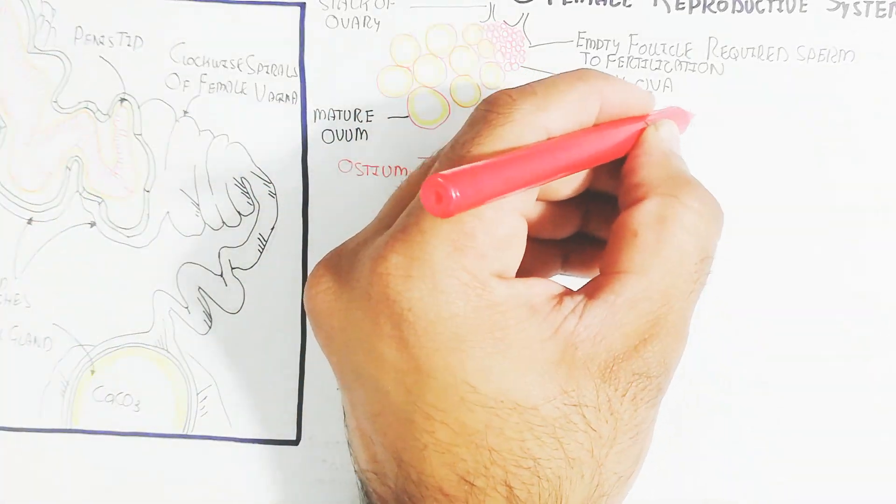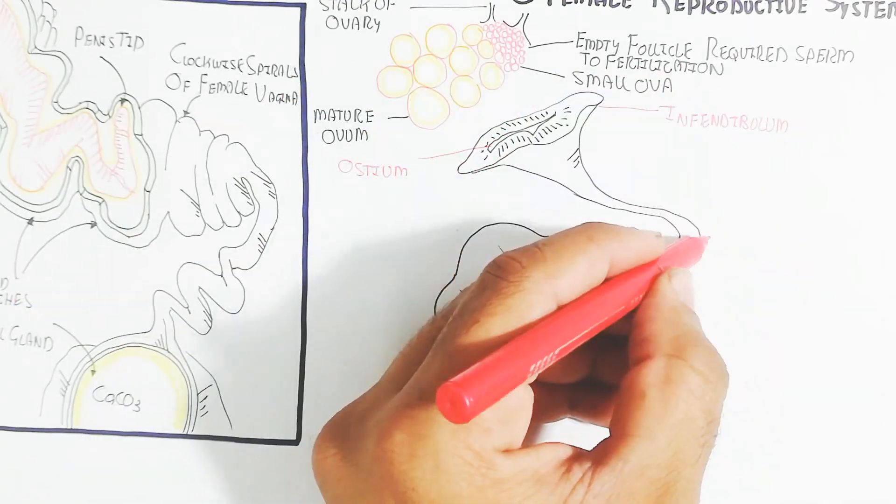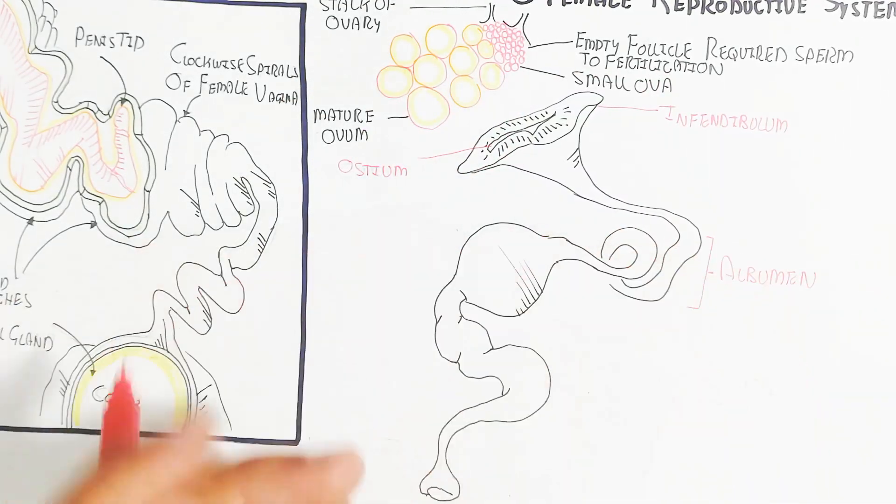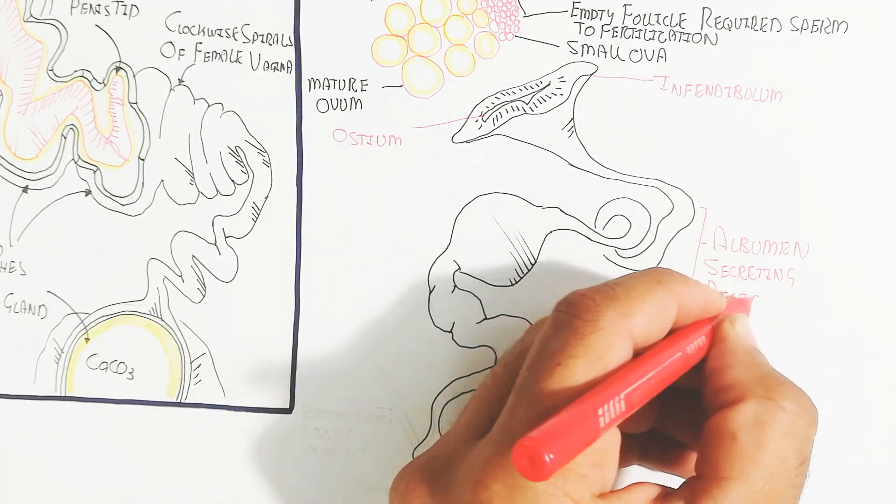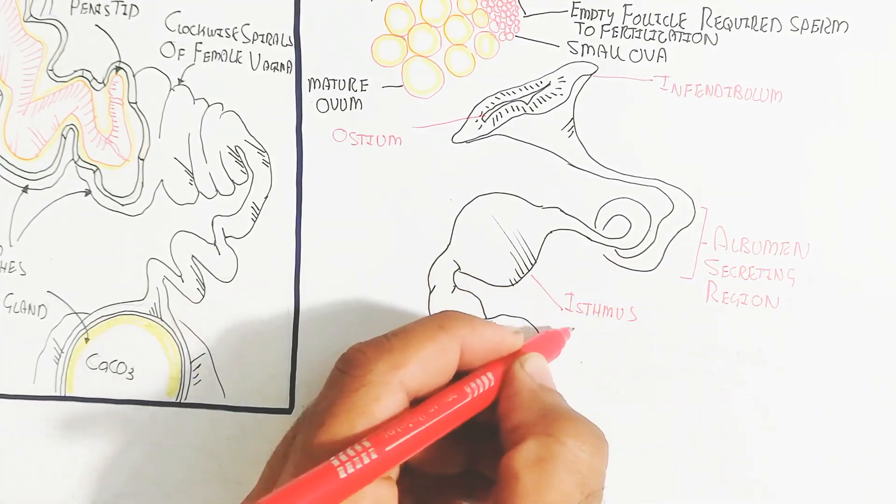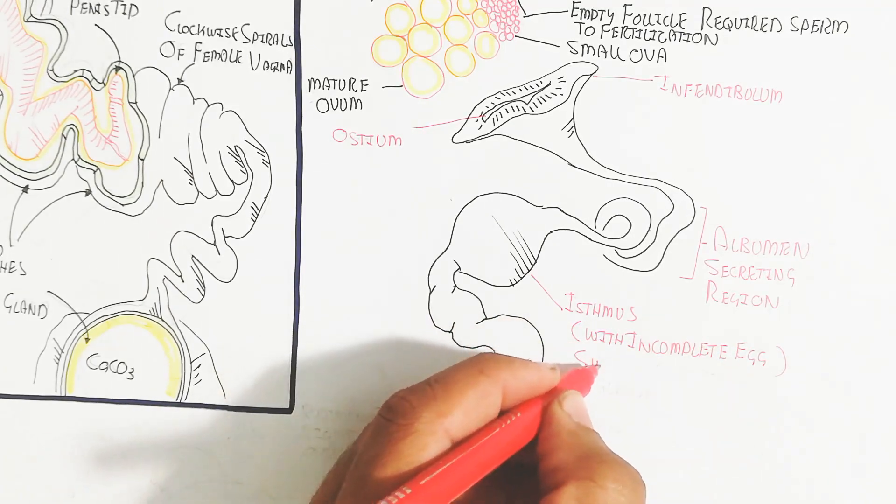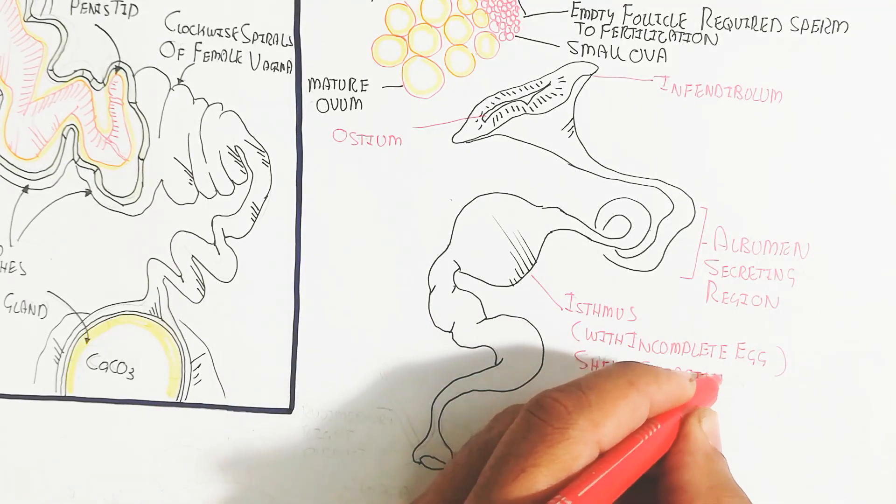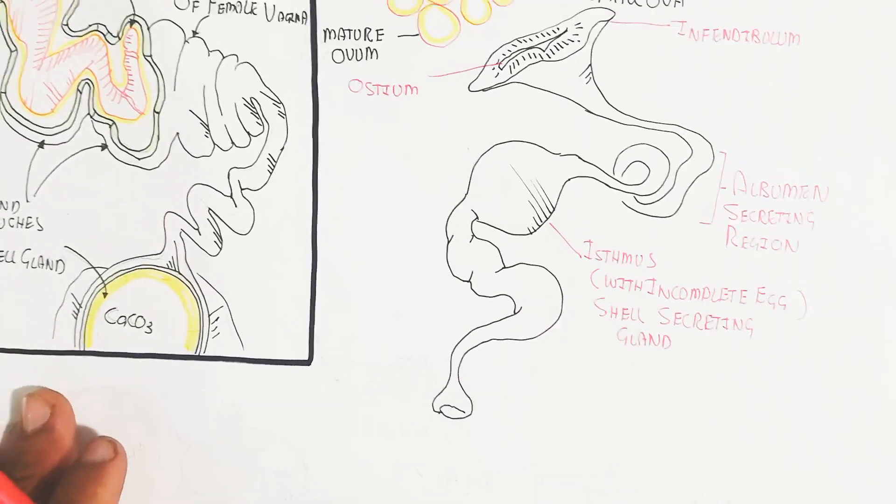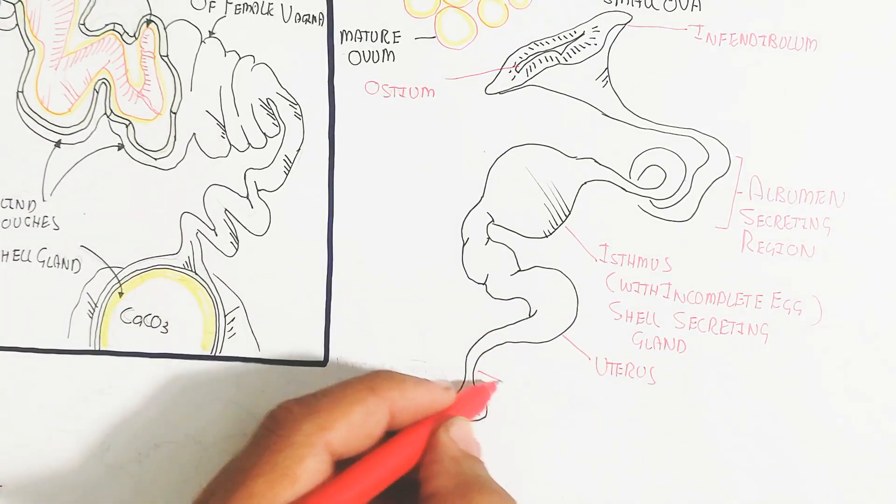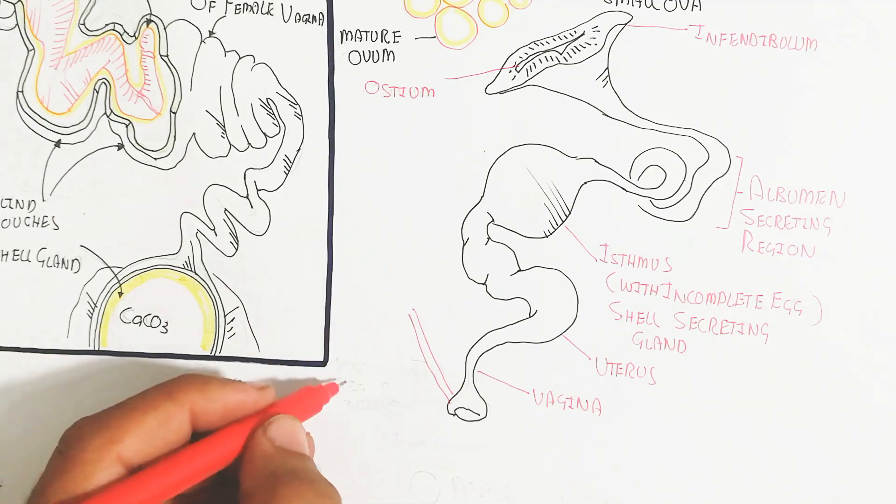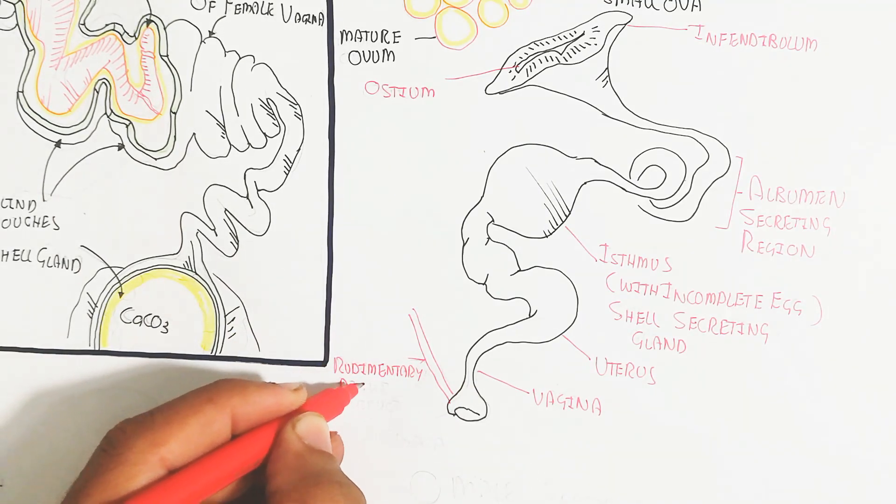This is the infundibulum and the albumen secreting region. The isthmus with incomplete egg, the shell secreting gland containing the shell, the uterus, the vagina, a rudimentary right oviduct, and the cloaca for penetration.